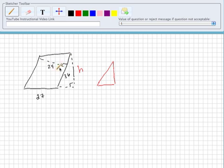It looks like it has a big leg of 24. And since the sides of a parallelogram are congruent, it has a hypotenuse of 27.